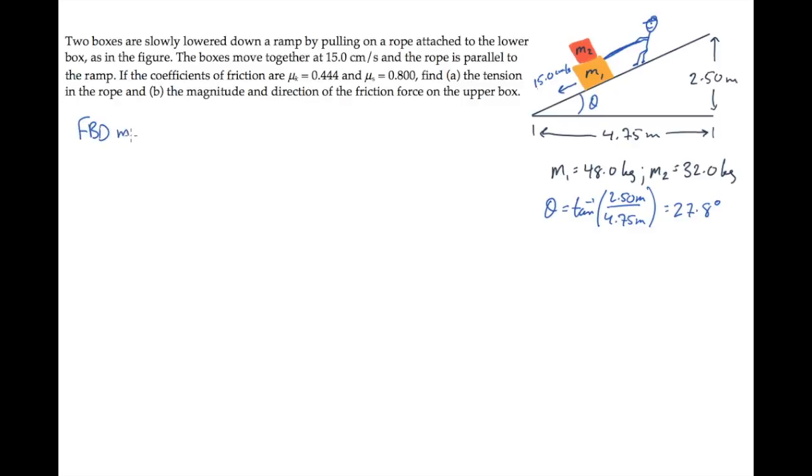Now let's draw two free body diagrams, one for the crate of mass m2 and one for the system of the two crates together. There are three forces acting on crate two: its weight directed straight down, a normal force perpendicular to the surface between m1 and m2,